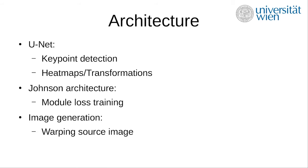The U-Net architecture is used for grouping pixels in the image into heatmaps, where each heatmap corresponds to one key point, indicating which areas are affected by the transformation. The Johnson architecture is a deep residual convolutional neural network for training the loss functions of a model, utilizing multiple loss functions to evaluate the difference between two images using perceptual comparison instead of pixel-by-pixel comparison. For image generation, a specialized generation module warps the features of an object using an optical flow map, a transformation mask, and an occlusion map.